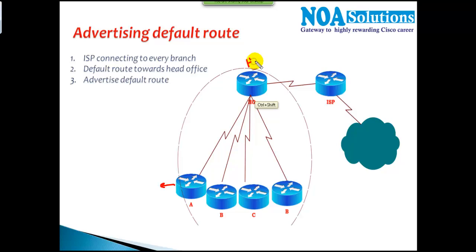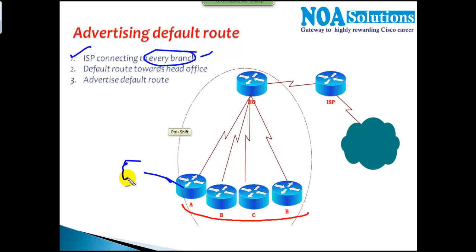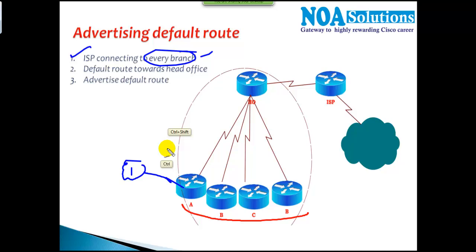Take an example: I have a head office with a default route toward the ISP. My requirement is that all branch offices should also be able to access the internet. One possible solution is to have a separate ISP connection for each and every branch office — router A branch office gets its own ISP connection, branch B gets one, branch C gets one, and so on. Then on each router you configure 'ip route 0.0.0.0 0.0.0.0' with the local ISP next hop.